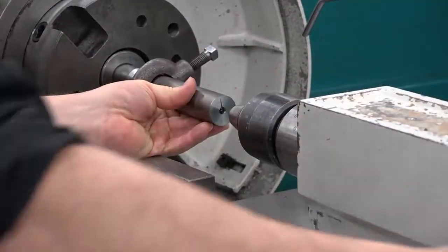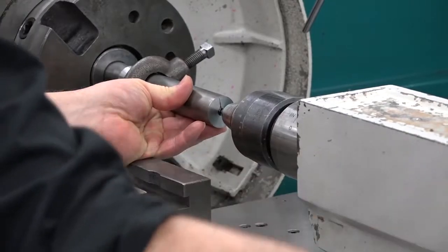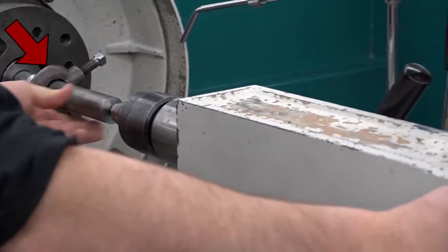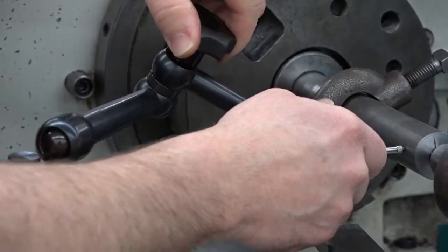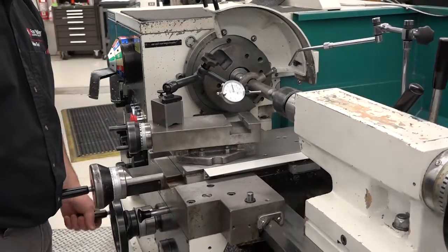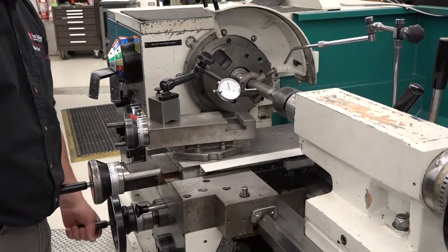Begin by setting up the workpiece between centers. Leave the lathe dog fairly loose on the part. Use an indicator to make sure the headstock and the tailstock are aligned. Mount a dial indicator to measure the amount of tailstock offset.